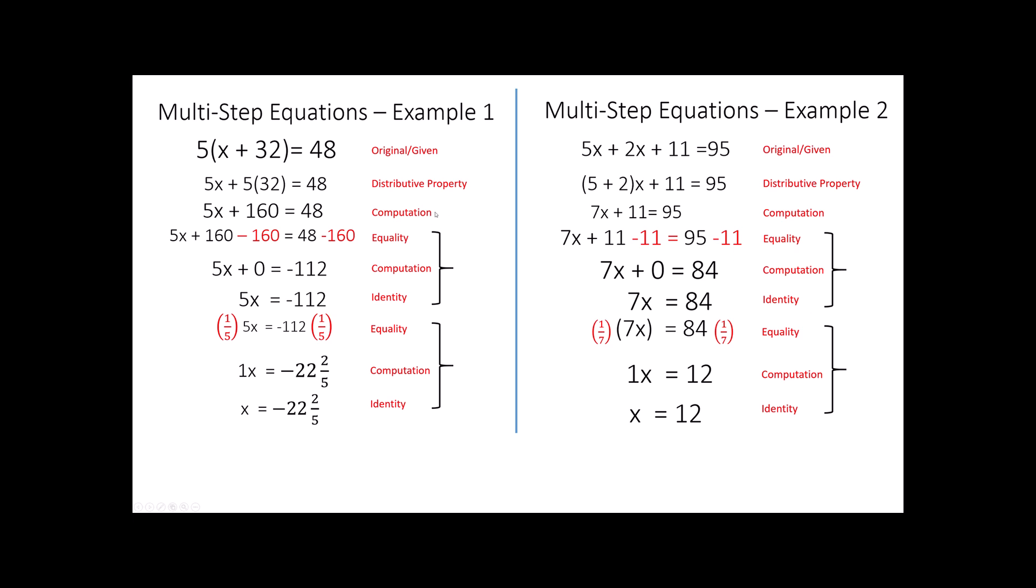Now, we've talked often about this simple two-step equation form and how once we reach this form of the equation, these generally solve the exact same way. We use the property of equality to get rid of the 160. Notice we use the additive inverse. To get rid of plus 160, we do minus 160 or negative 160, and we have to do it on both sides. That's the property of equality. We then do a little computation, use the identity property to get rid of the zero. We look at this times five and realize that if we want to get rid of that, we need to use the multiplicative inverse, which is times one-fifth. A lot of people do divide it by five, which is the same thing. Giving us one x, negative 22 and two-fifths. Property of equality, computation, and identity.